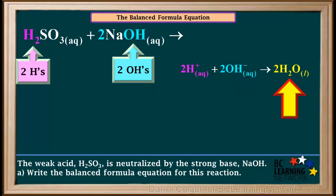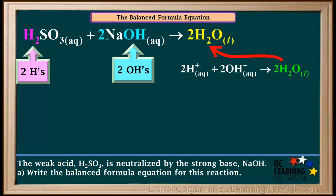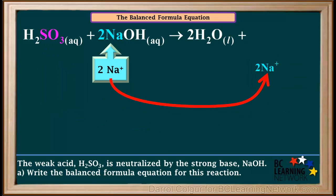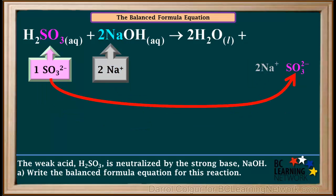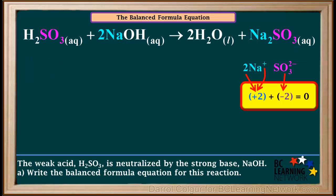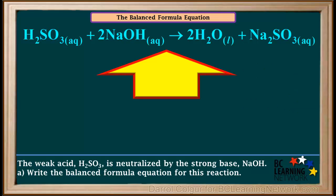The two H+ ions from the acid will combine with the two OH− ions from the base to form two molecules of liquid water, so we'll add 2 H2O liquid to the products. A neutralization reaction produces water and a salt. Two NaOH contributes two Na+ ions, and one H2SO3 contributes one sulfite ion. So the correct formula for the salt is Na2SO3. Like all sodium salts, sodium sulfite is highly soluble, so we use the subscript AQ. Notice the total charge of the two Na+ ions (+2) and the charge of one sulfite ion (−2) add up to zero, confirming that Na2SO3 is the correct formula for the salt. So now we've completed the balanced formula equation for this reaction.